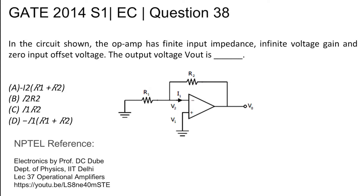This is GATE 2014 Set 1 EC question number 38. In the circuit shown, the op-amp has finite input impedance, infinite voltage gain, and zero input offset voltage. The output voltage V-out is to be found from the four given options.